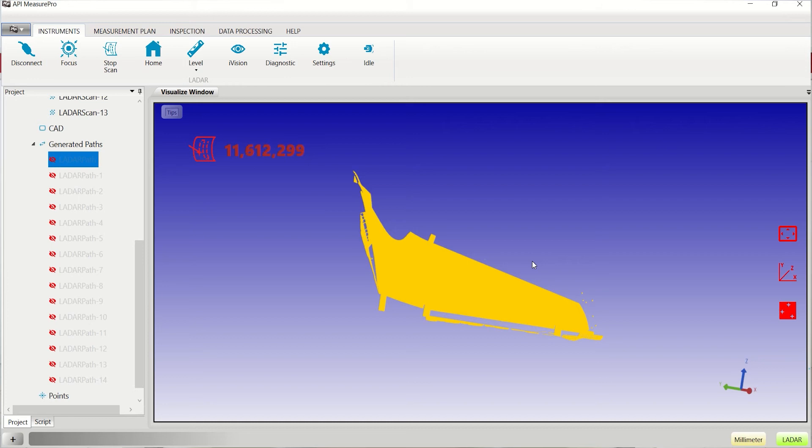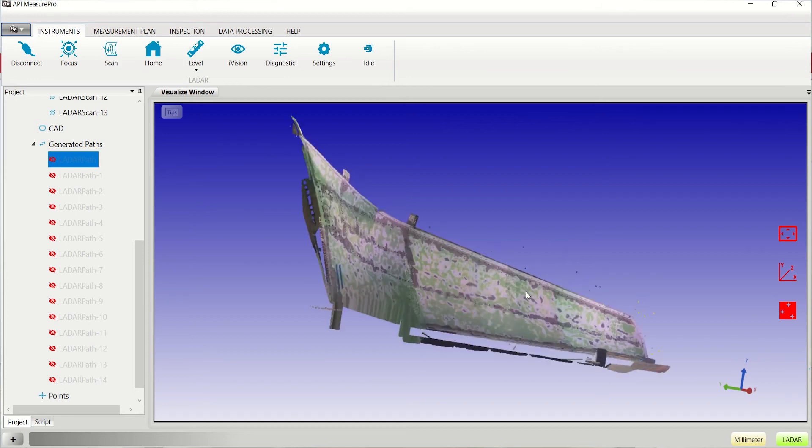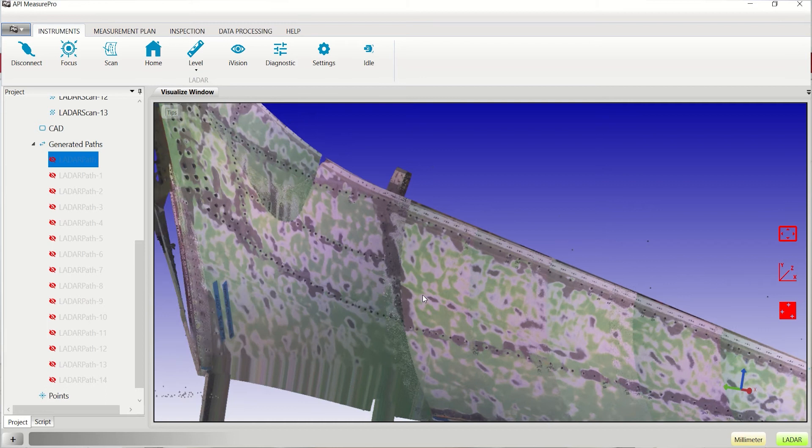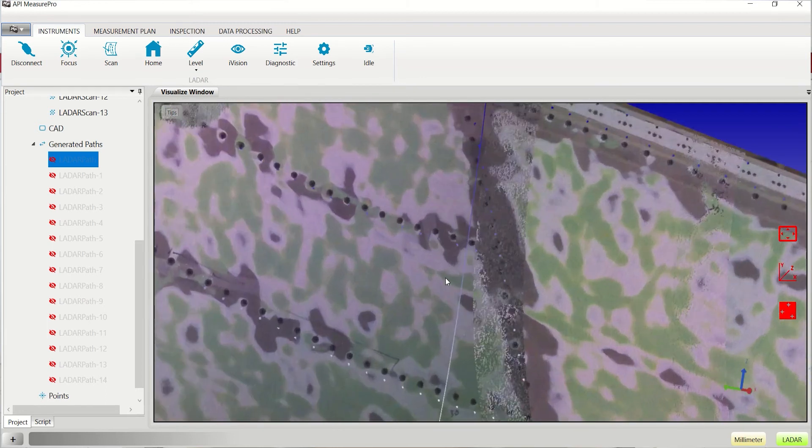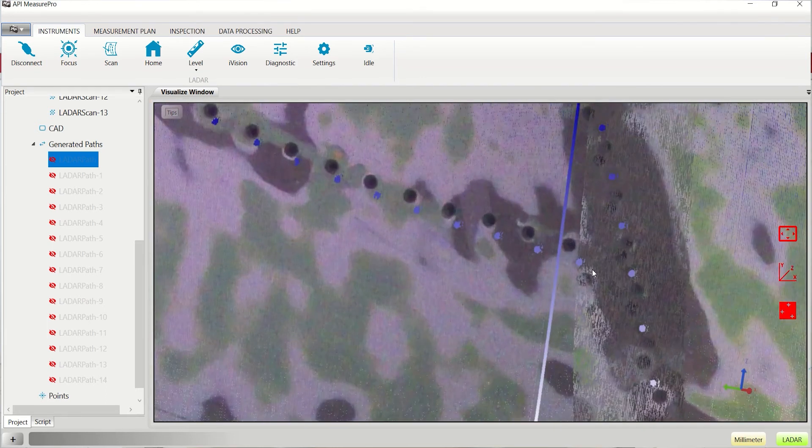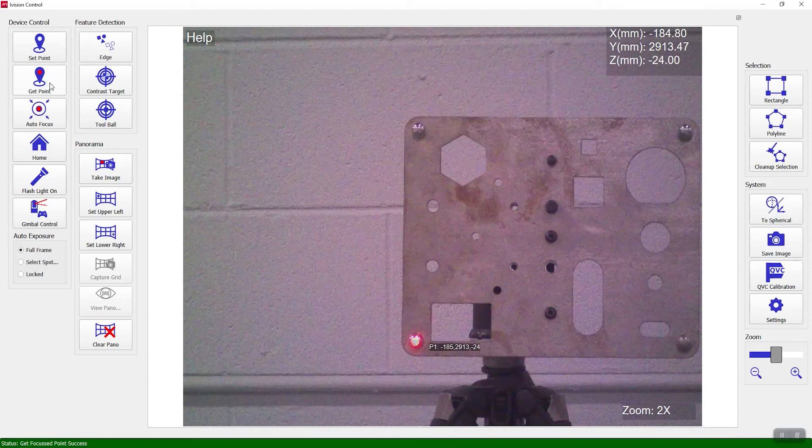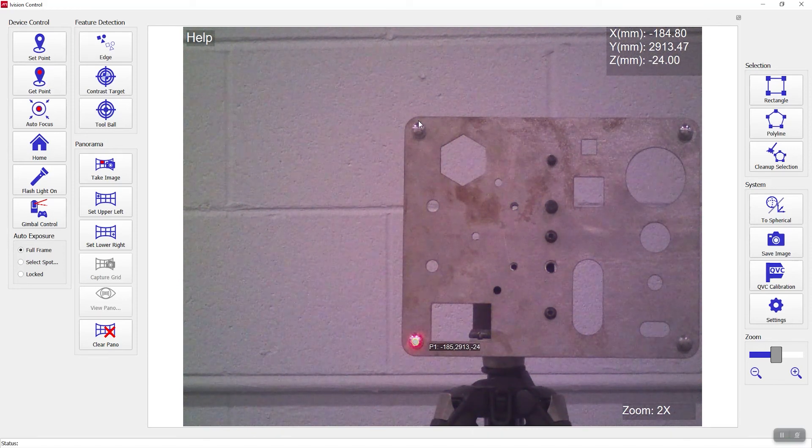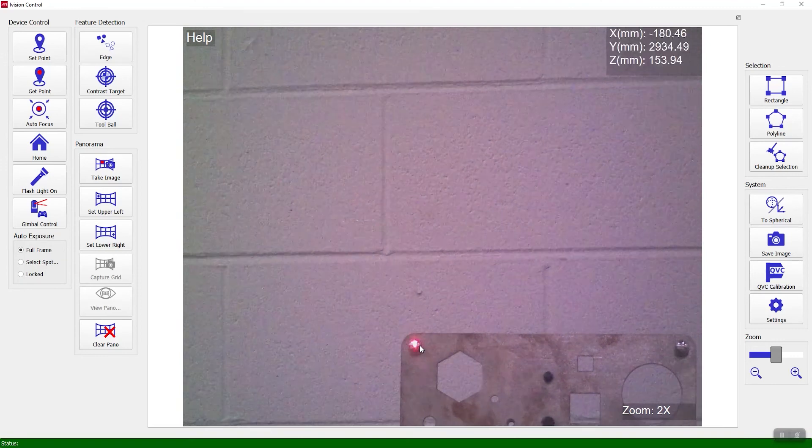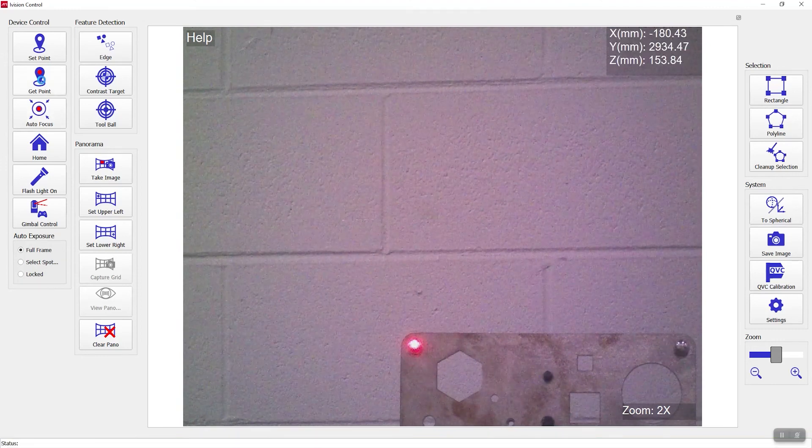Lastly, the metrology software and high-definition camera system work together to provide remote control of the unit and refine the measurement parameters. The software provides a live view of 9D LADAR's camera. Using this view, the user can select specific part features to measure and change point spacing and resolution.